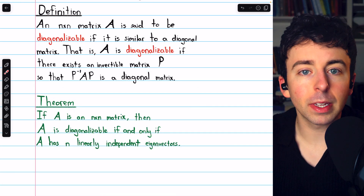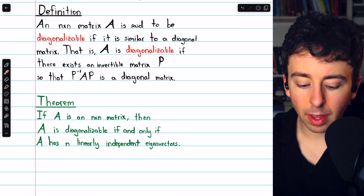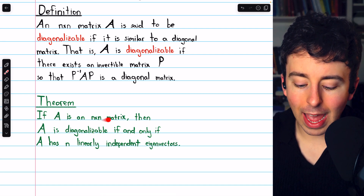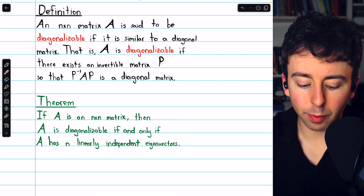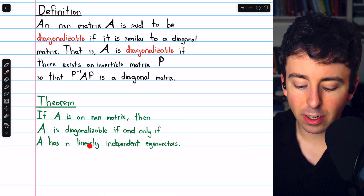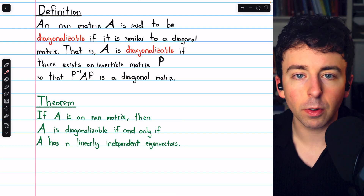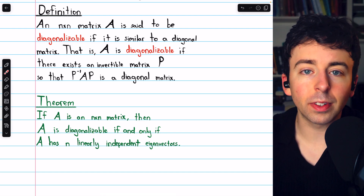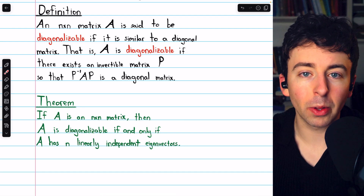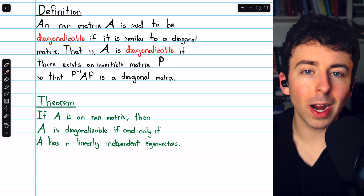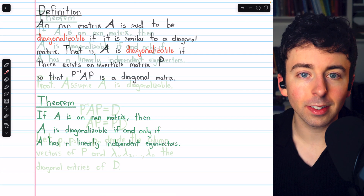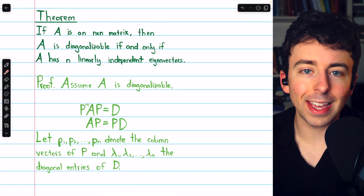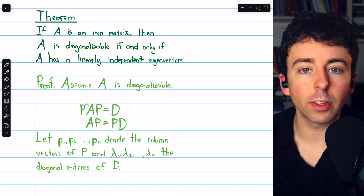Here is our key theorem concerning diagonalizability: if A is an n by n matrix, then A is diagonalizable if and only if A has n linearly independent eigenvectors. We're going to prove this now, because in the proof we'll go through the process we actually use for diagonalizing a matrix. This is an if-and-only-if theorem, so we'll have two directions to prove.